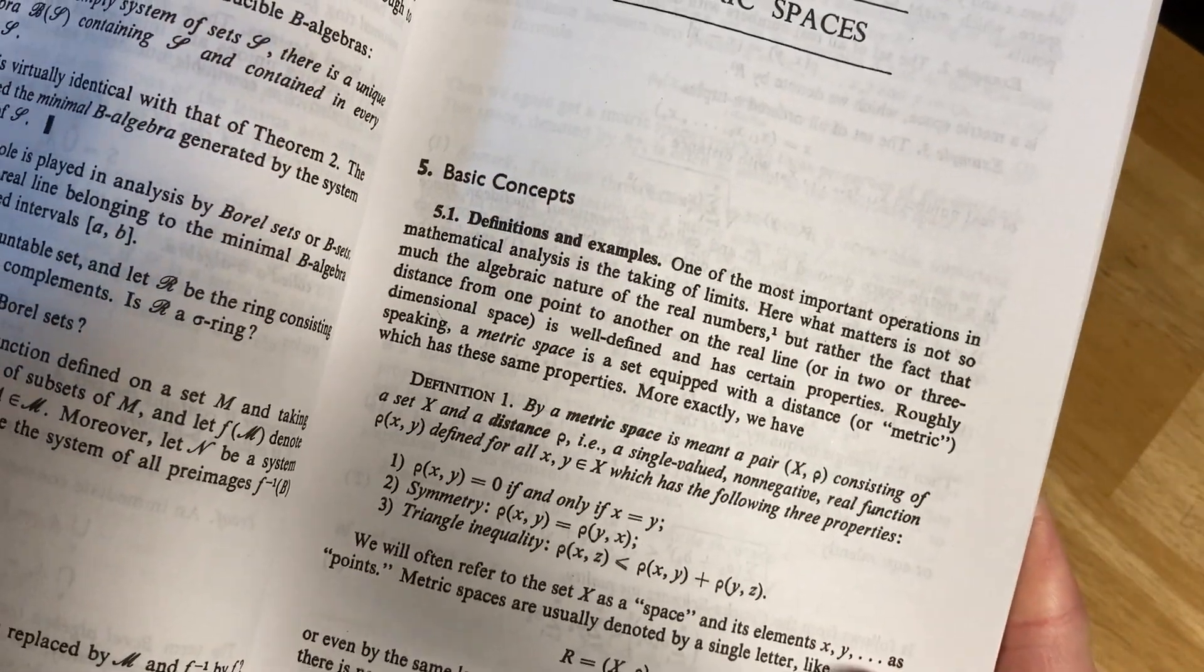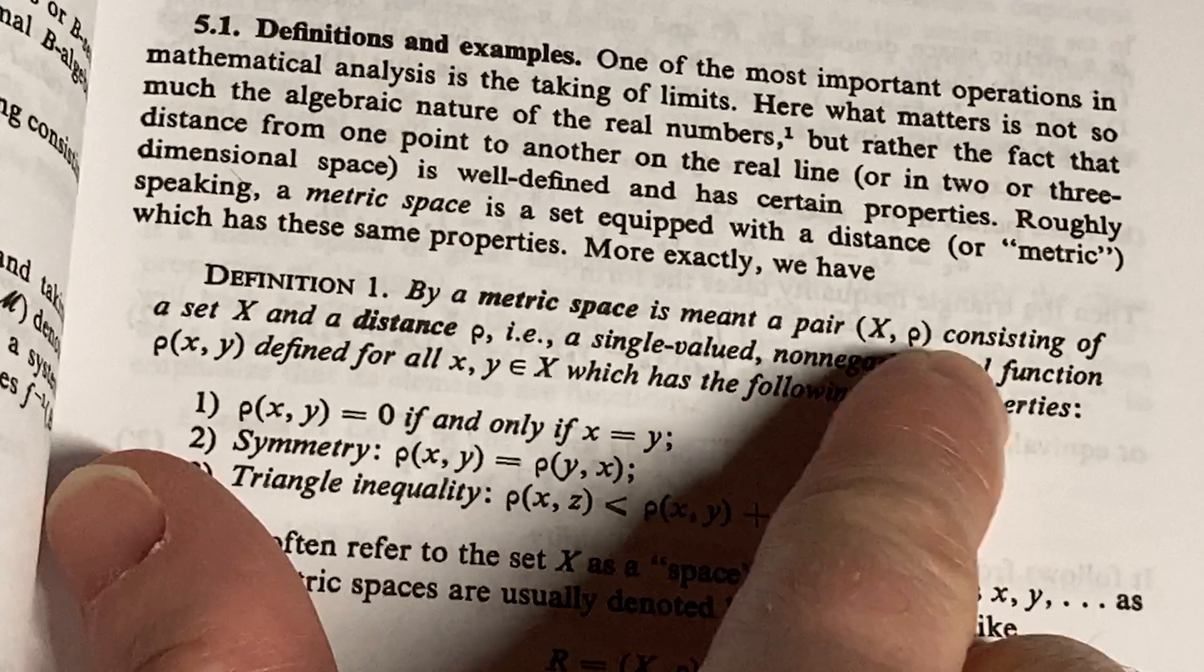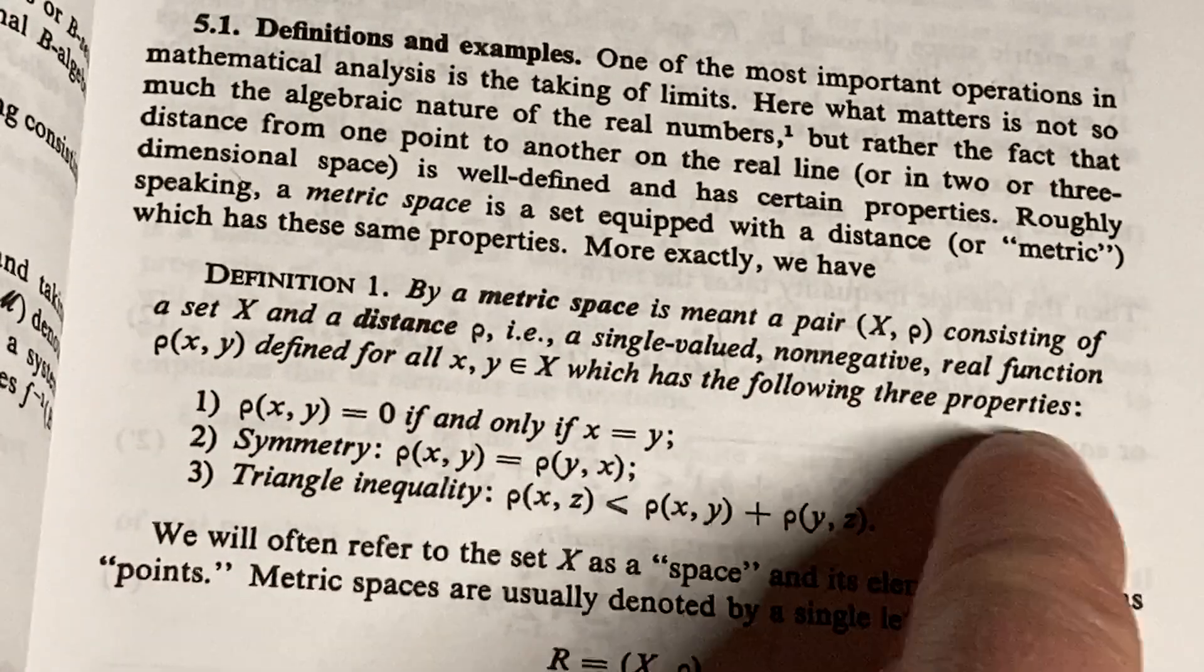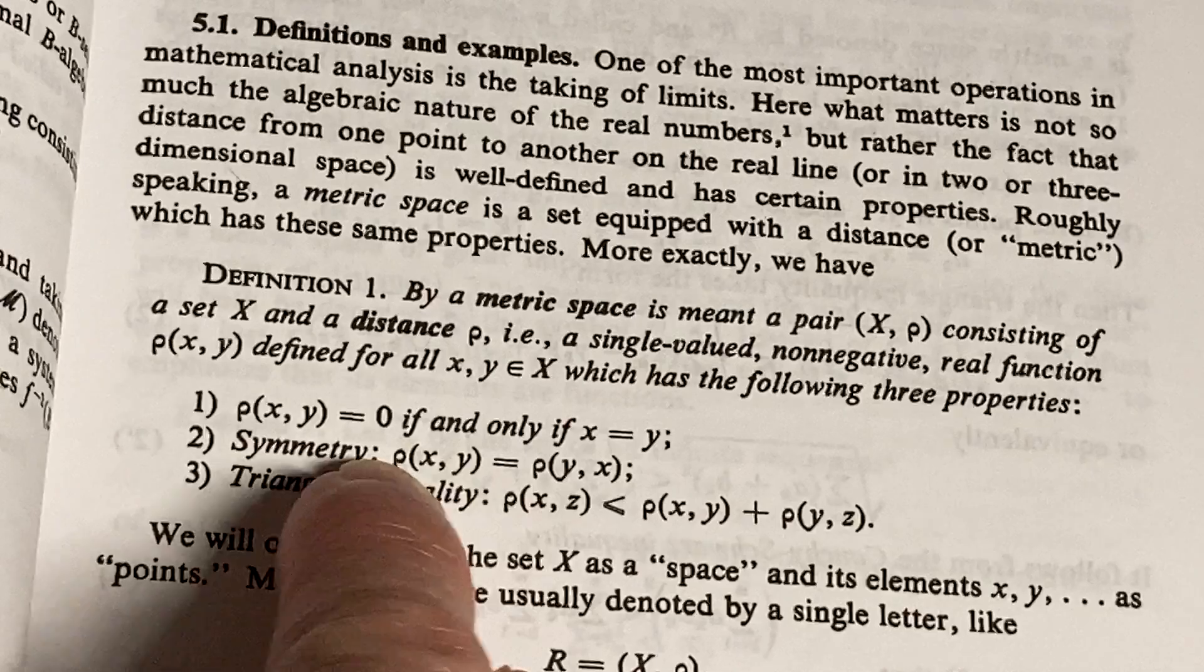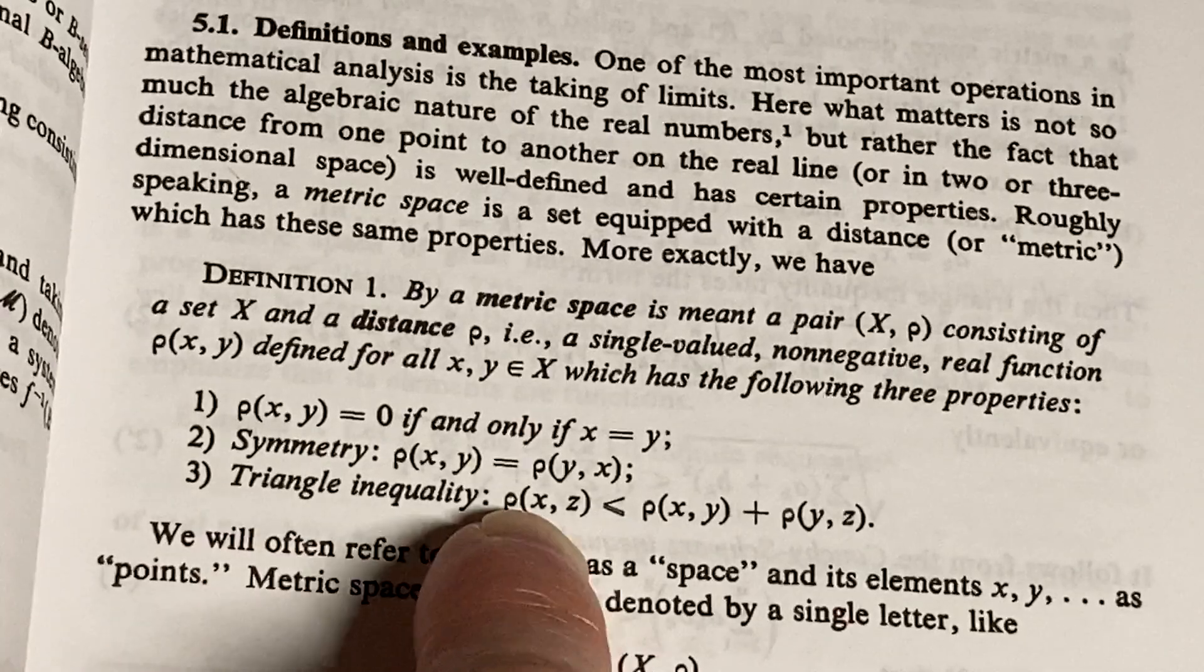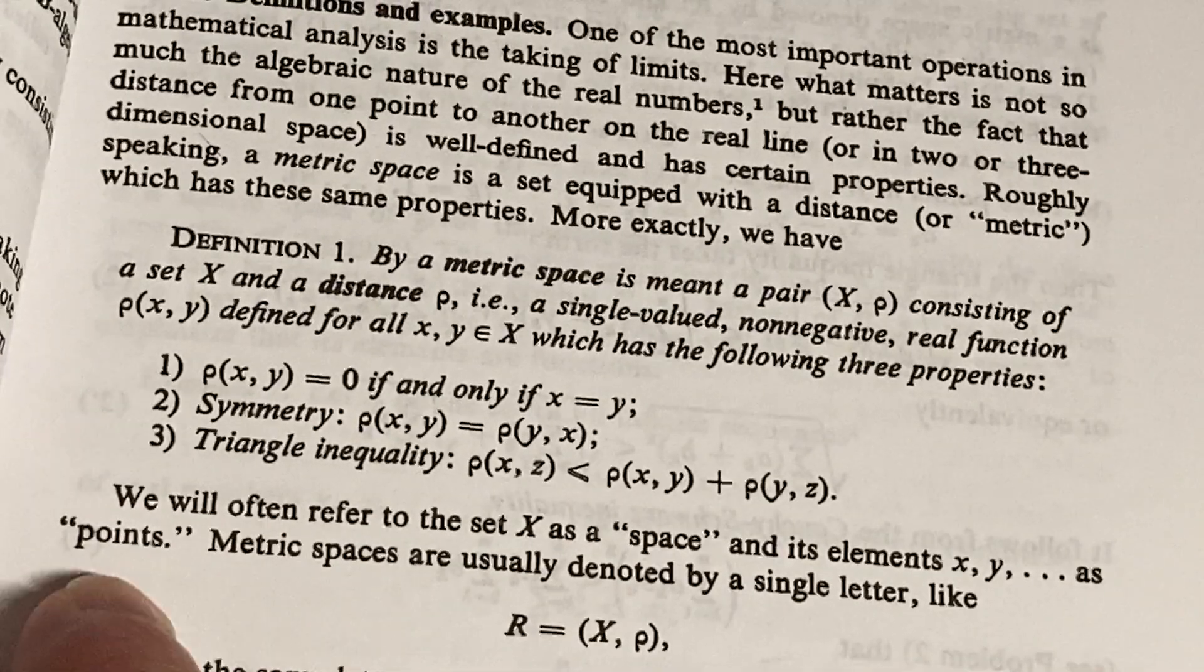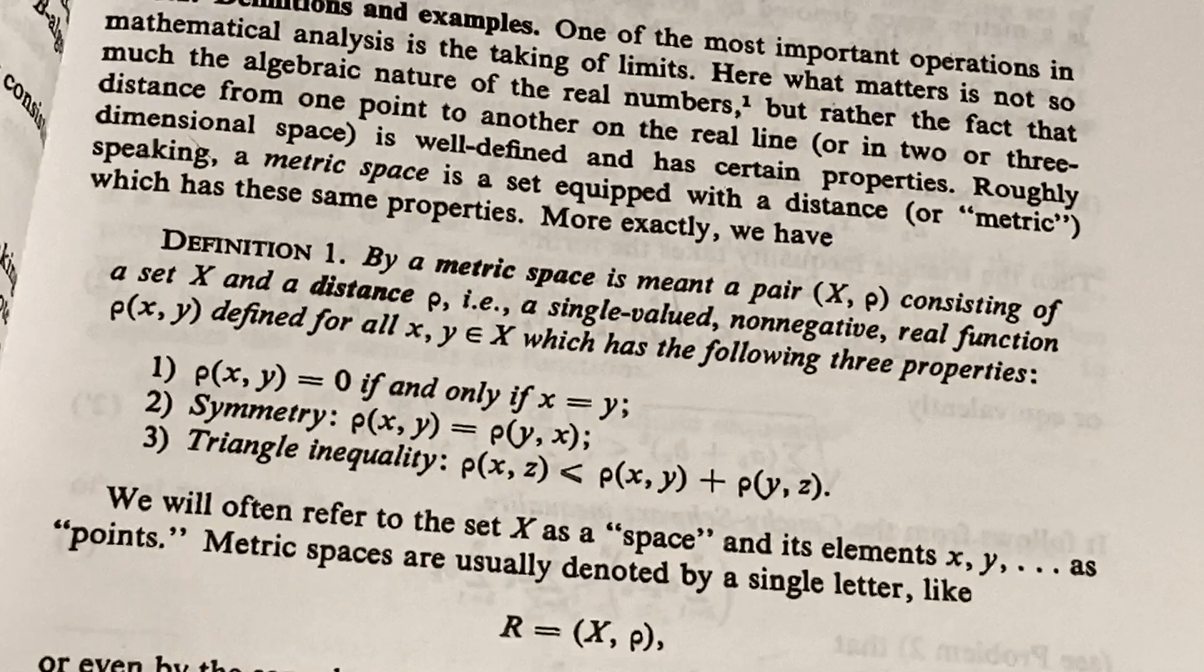This is really fun. Yeah, let's look at this definition here. It's the definition of a metric space. By metric space is meant a pair x comma rho consisting of a set x and a distance rho. It is a single valued non-negative real function rho of xy defined for all xy in capital X, which has the following three properties. So rho of xy is equal to zero if and only if x is equal to y. Symmetry. So rho of xy is equal to rho of yx for all xy. And last but not least, the infamous triangle inequality. Rho of xz is less than rho of xy plus rho of yz. You'll often refer to the set x as a space and its elements x, y, etc. as points.